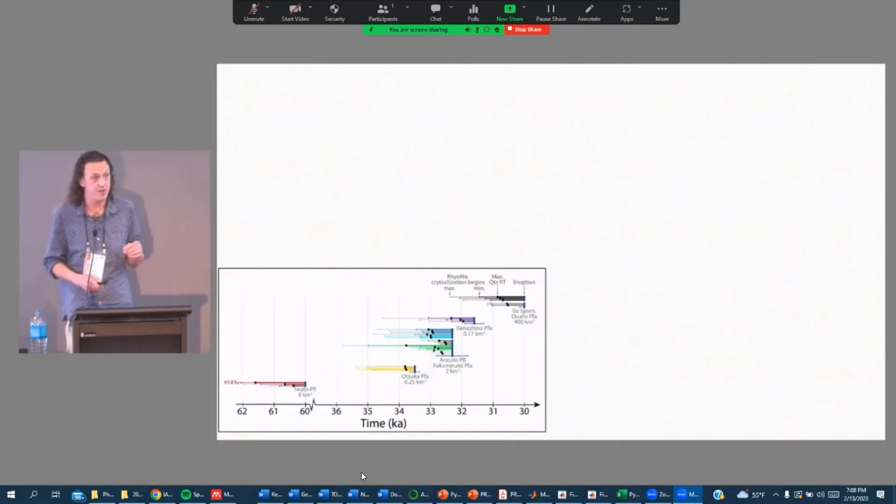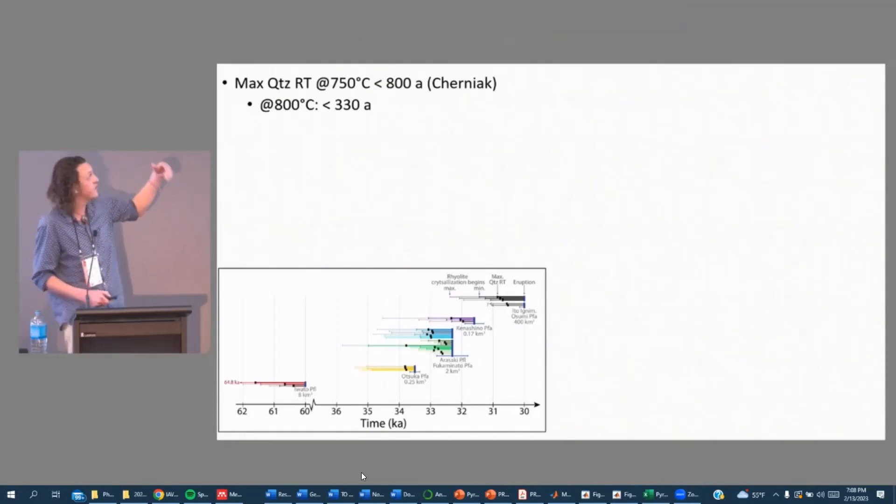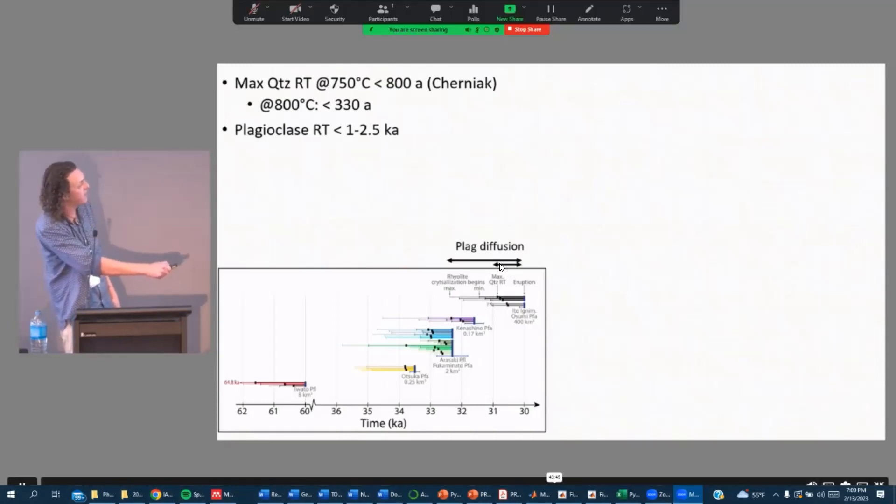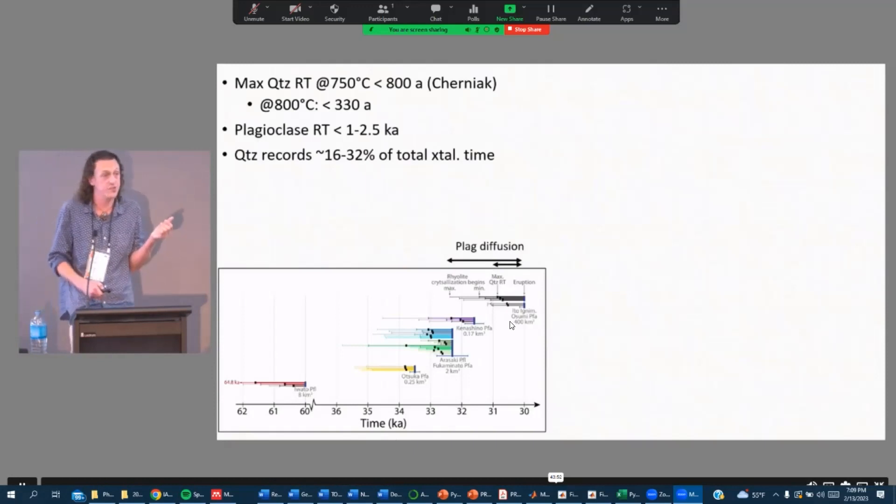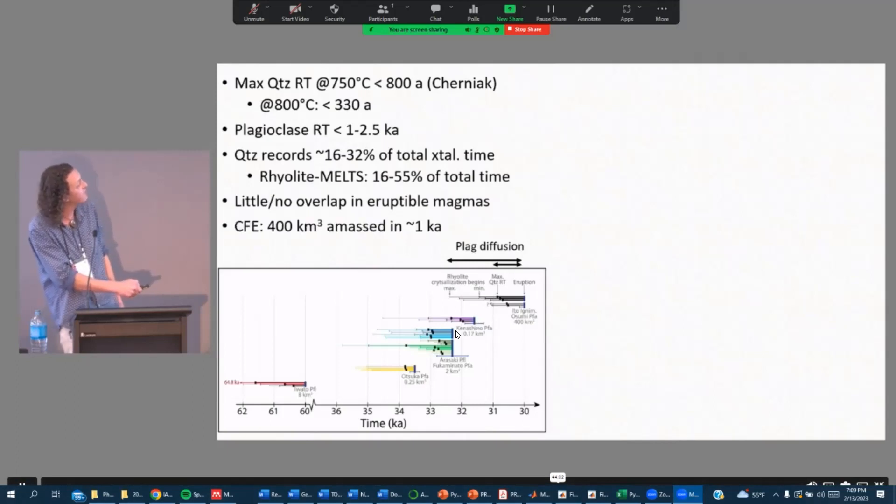So then finally that brings us to two possible scenarios here. One is that the max quartz residence time at 750 degrees Celsius is 800 years as predicted by Cherniak's diffusivity. And then plagioclase, as I just showed you, must have only been diffusing for up to about 2500 years. Here's that timeline diagram again. Here's plagioclase diffusion of 1 to 2500 years. That would mean that quartz records 16 to 32% of the total crystallization time, which is consistent with what rhyolite melts predicts, about 16 to 55% of the total time. And if this is the case, that means there's little to no overlap in those eruptable magmas. Therefore the caldera forming eruption, the 400 cubic kilometers, were amassed in less than 1000 years.